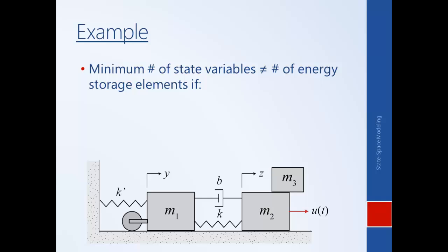A couple of things to point out regarding when the minimum number of state variables doesn't equal the number of energy storage elements. The state variables are determined by the number of independent energy storage elements. For example, if I had a second spring, I have two energy storage elements, but the energy stored in each is determined by the same state variable — so I don't need a separate one. Similarly, if M3 doesn't slide relative to M2, they share the same velocity and the same state variable.